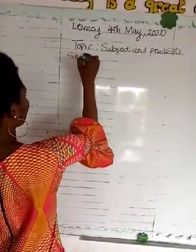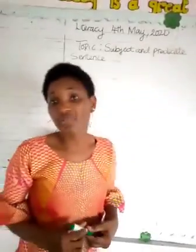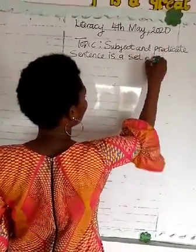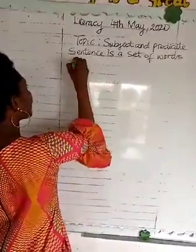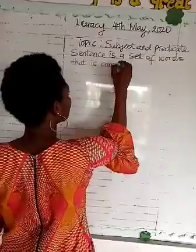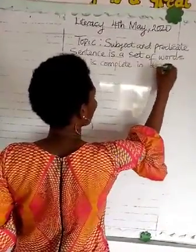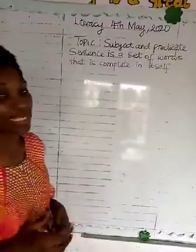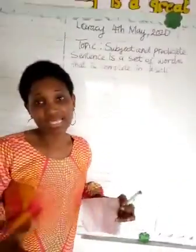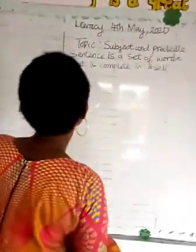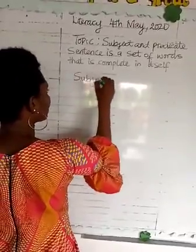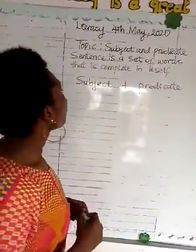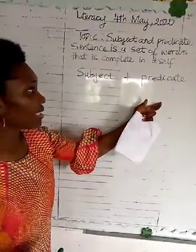Sentence. What is a sentence? Nosa, can you define a sentence for me? A sentence is a set of words that is complete in itself. That's a lovely definition. And a complete sentence has two parts. What are the parts? We have the subject and we have the predicate.